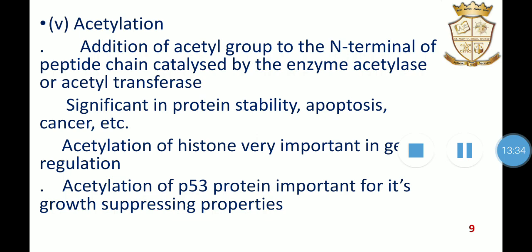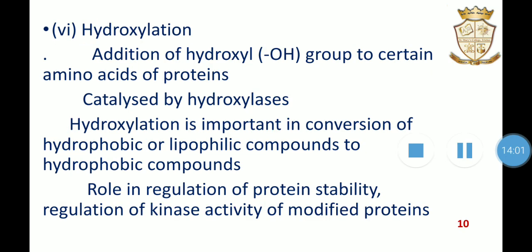Acetylation and deacetylation of histones is very important in gene regulation. Acetylation of histones reduces the positive charge, which in turn reduces its interactions with the negatively charged phosphate group of DNA and thereby makes it less tightly bound to DNA. Thus, DNA is readily accessible to gene transcription. Hydroxylation is the addition of a hydroxyl (OH) group to certain amino acids of protein, catalyzed by hydroxylases. The amino acids that are usually hydroxylated include proline, lysine, asparagine, and histidine. It is important in the conversion of hydrophobic or lipophilic compounds to hydrophilic compounds, regulation of protein stability, and regulation of the kinase activity of some modified proteins.